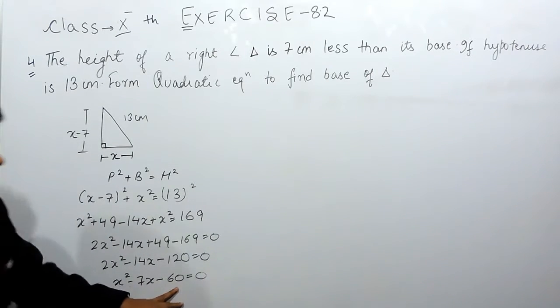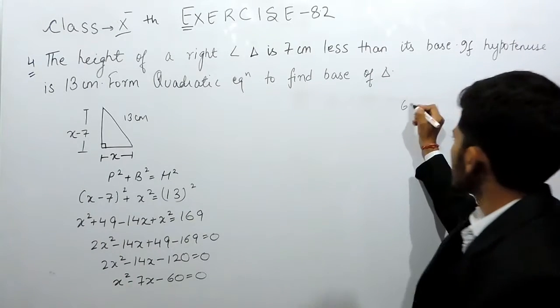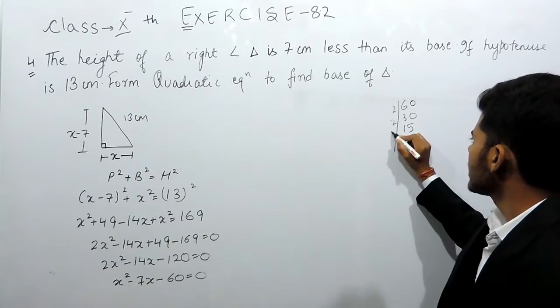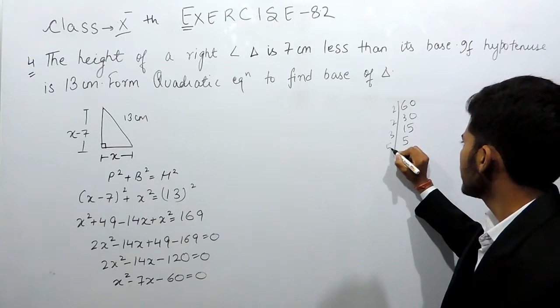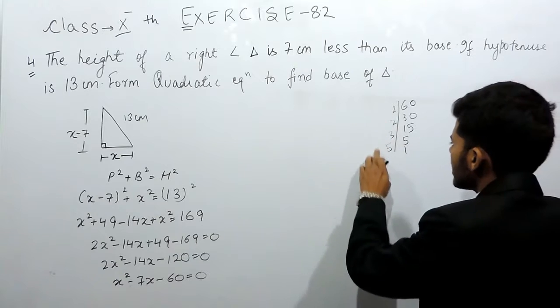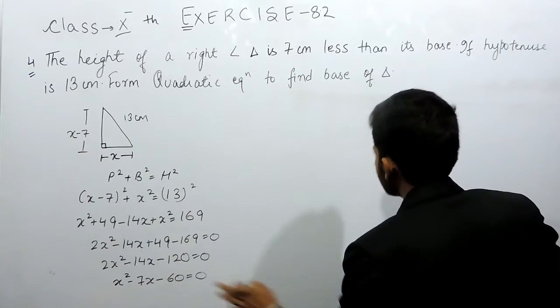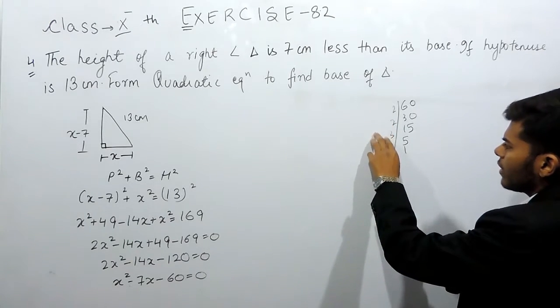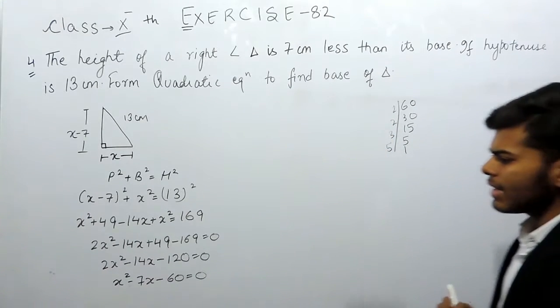Now we will try and factorize this 60. So this will be 2 times 30, 2 times 15, 3, 5 times 5, 1 time. Now we have to arrange them in such a manner that we get 7. So that can be 2 times 4, 3 times 12, 12 minus 5, that is 7.